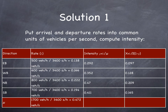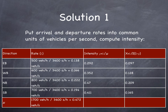The first thing we need to do is put arrival and departure rates into common units of vehicles per second and then compute intensity. The arrival rate lambda for each movement is the number of vehicles on that movement per hour divided by 3,600 seconds per hour. This gives us, in the case of the eastbound movement, 0.138 vehicles per second. You can see the values for the other movements. Similarly, we compute the intensity, or lambda over mu. The mu, or server rate, is 1,700 vehicles per hour, or 0.472 vehicles per second. So the intensity for the eastbound movement is 0.138 divided by 0.472, which gives us 0.292. We can do this for all movements.